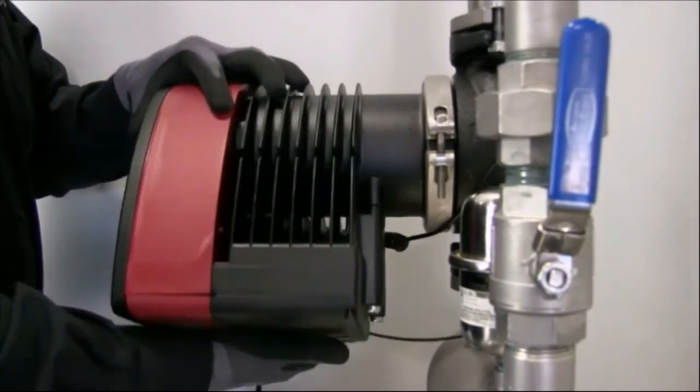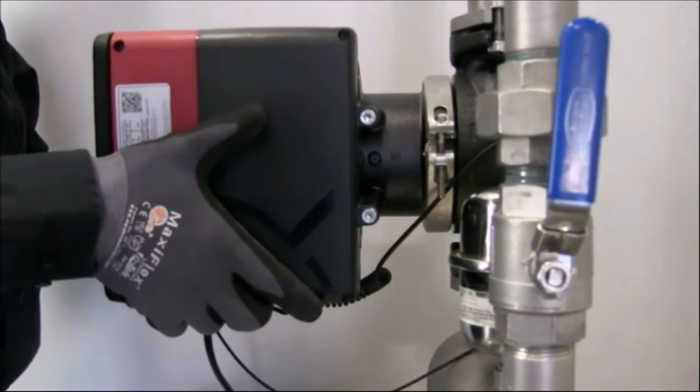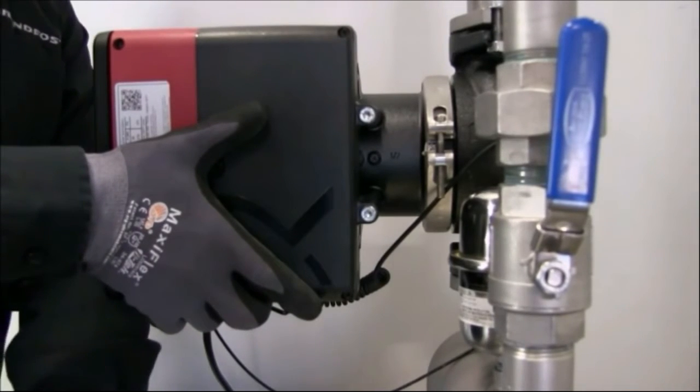Then carefully rotate the pump head into the desired position. If it's stuck, just use some light blows with the rubber mallet.